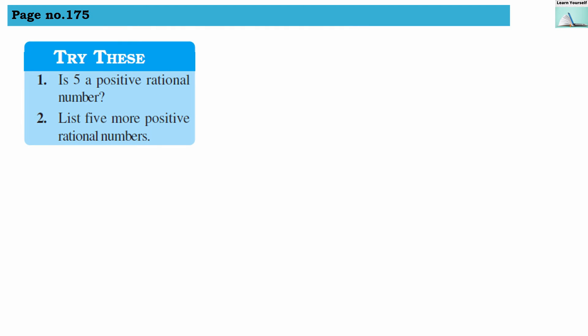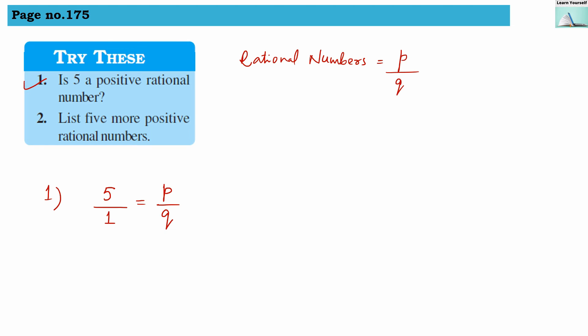The second set of questions: the first question is, is 5 a positive rational number? We can write 5 as 5 divided by 1, which is in the form of p divided by q. Rational numbers are always in the form p divided by q where q can never be 0. Since 5 divided by 1 fits this form and has no negative sign, yes, it is a positive rational number.